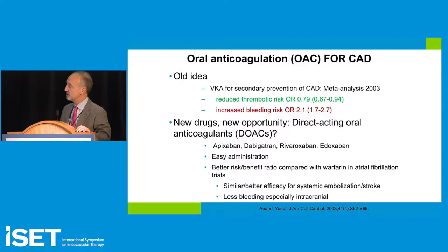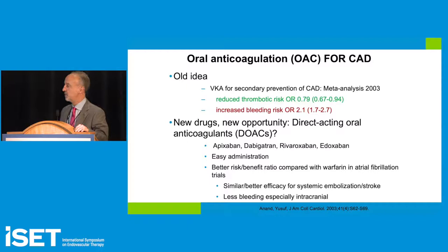DOACs are easier to administer, don't require testing, and in atrial fibrillation studies, were at least as good or better in systemic embolization and stroke reduction, but with less intracranial bleeding. There are two mechanisms of DOAC action: one through direct thrombin inhibition — dabigatran inhibits thrombin — and with factor Xa inhibitors, you inhibit the transition from prothrombin to thrombin.